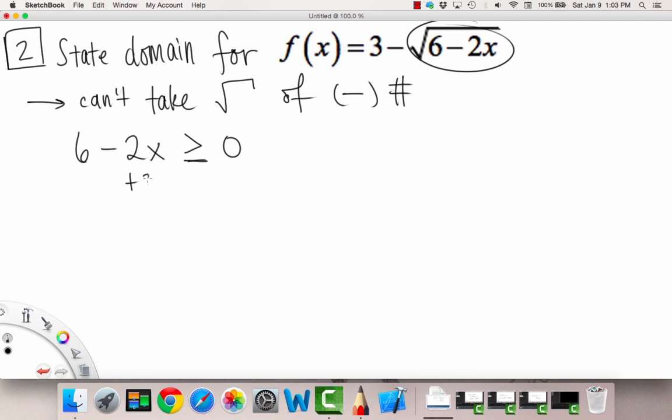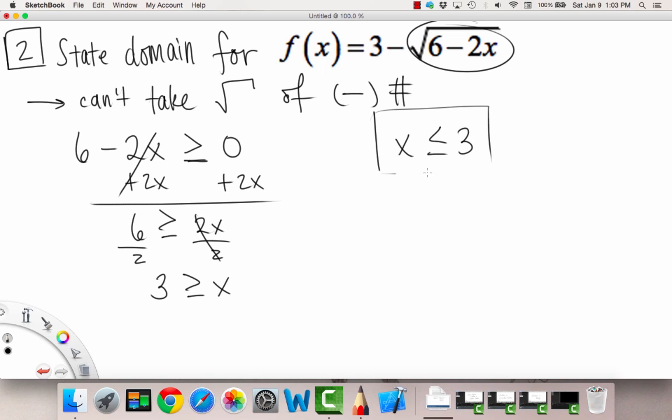So how do we do that? We're just going to move this 2x to the other side, so we're going to add it there. Then we have 6 ≥ 2x, which is divided by 2, a positive 2 on both sides, and we get x ≤ 3. So let me rewrite it over here. So x ≤ 3, so this is acceptable as a domain, that's our inequality form.